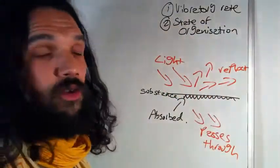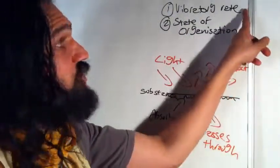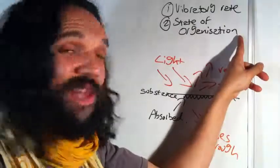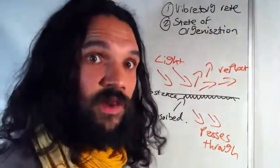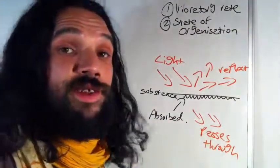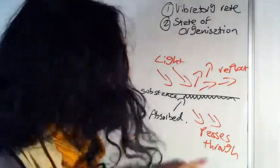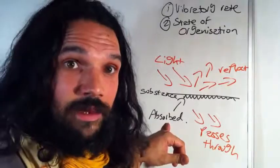What's happening to us in our enlightenment is that we're changing our vibratory rate and our state of organization of the bodies of our mind and emotions, or the substance of our mind and emotions, so it can receive higher light, so it can absorb higher light.